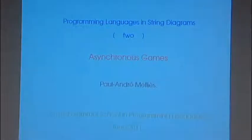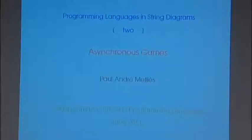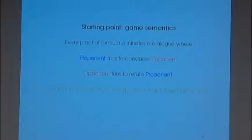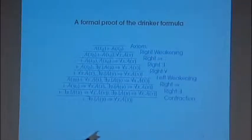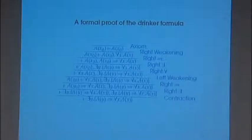So many things happened since this morning that I think maybe it's good just to see very quickly what we did. We discussed about this formula and we kind of played the game that this formula describes. We saw that if we play according to the rules and cheat a bit, then the proof is valid, and the formula is correct in classical logic.